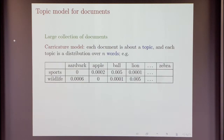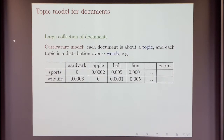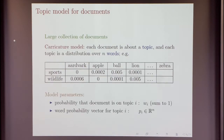To give an example, you might have a bunch of topics — say sports, wildlife, and so on. Each topic is a distribution over all the words in your dictionary. So wildlife might have some probability of seeing all these words, and the property here is that these probabilities add up to one. This is the simplest topic model.